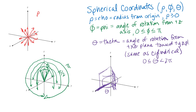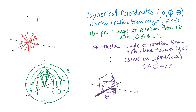Another word of caution: not all textbooks order the triple the same way — some use rho, theta, phi instead of rho, phi, theta. Additionally, some textbooks swap the definitions, calling theta what we call phi and vice versa. Unfortunately, neither the order nor the naming is standardized in spherical coordinates, so always pay attention to context when using other sources.